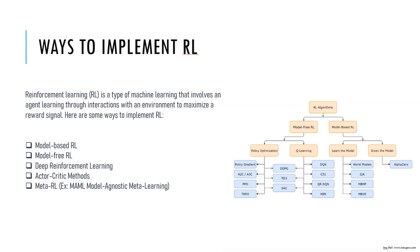Next is the actor-critic method. This is a type of reinforcement learning that combines policy-based and value-based methods. In the actor-critic method, the actor is a policy that decides which action to take, and the critic is a value function that evaluates how good each action is. The actor learns from the feedback of the critic, and the critic learns from the reward it receives.